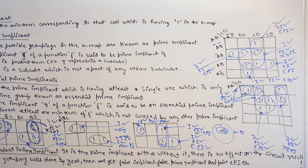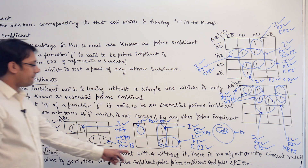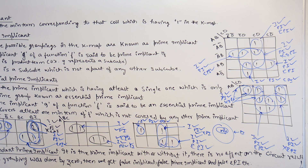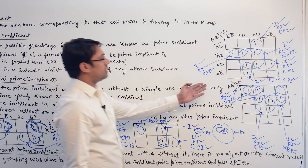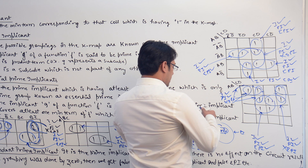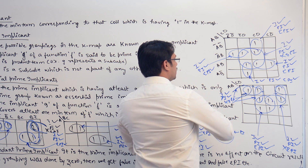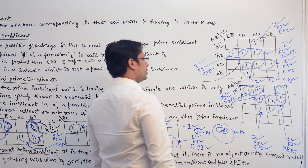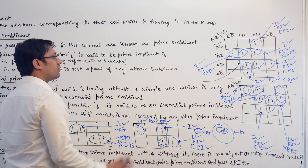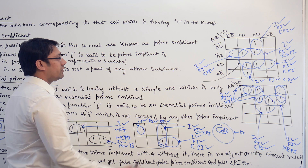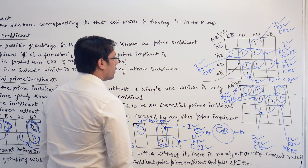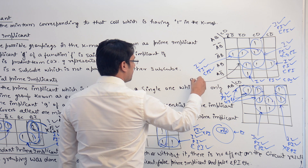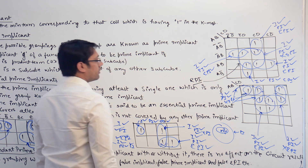Next is the redundant prime implicant. It is a prime implicant where, with or without it, there is no effect on the resultant circuit. For example, the biggest subcube we discussed — we can ignore this one because even if you don't use it, the solution equation we are getting will not be affected and will not change the logical value. Therefore, this one is a redundant prime implicant.